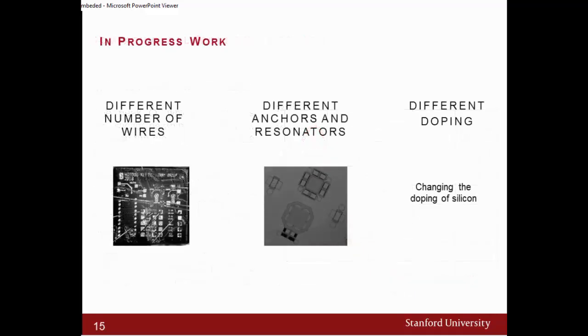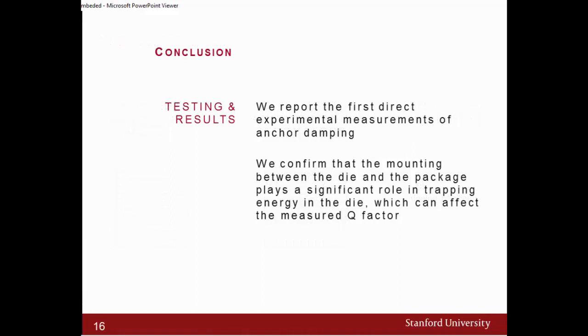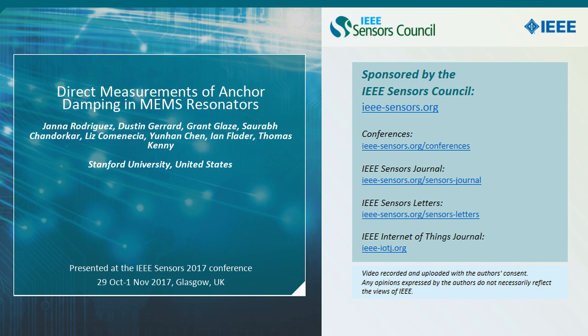So in the future, what we are doing is we are changing the number of wires, the number of anchors, and the number of doping for our resonators. So in conclusion, we reported and we were able to take for the first time the measurements of anchor damping and experimentally show that. We also confirmed that the mounting or the way that you are mounting your die to your package has an influence on the overall quality factor. Thank you very much for your time, and if you have any questions, I will take them. Thank you very much.